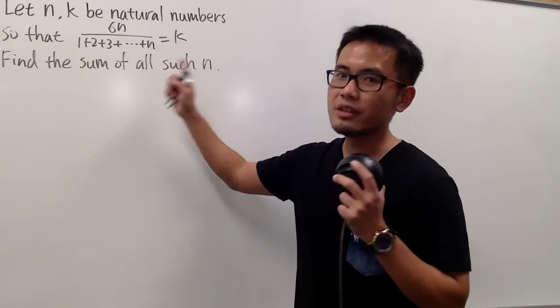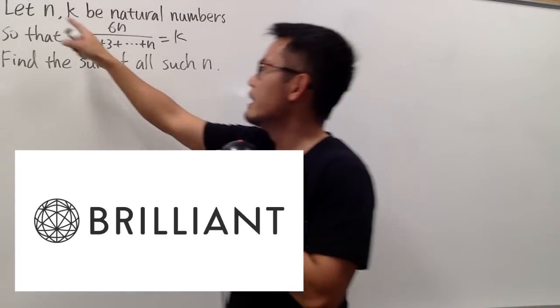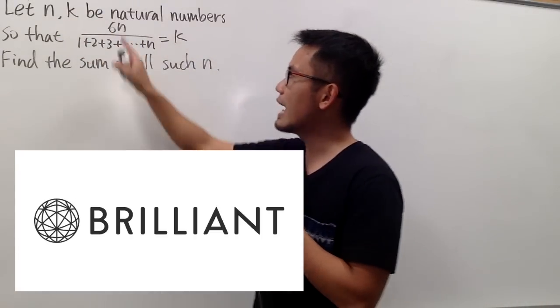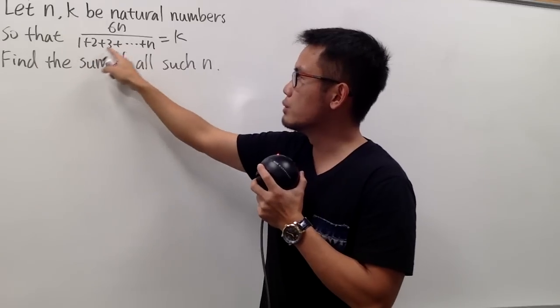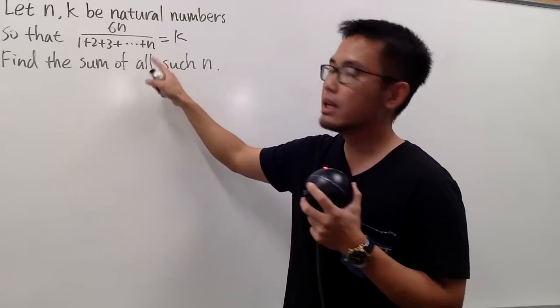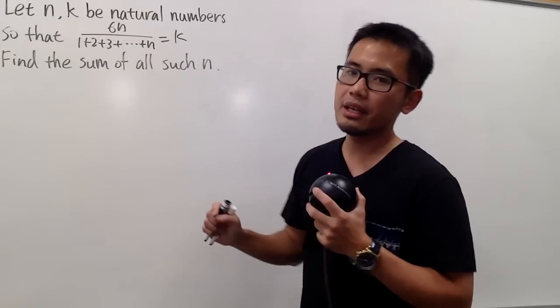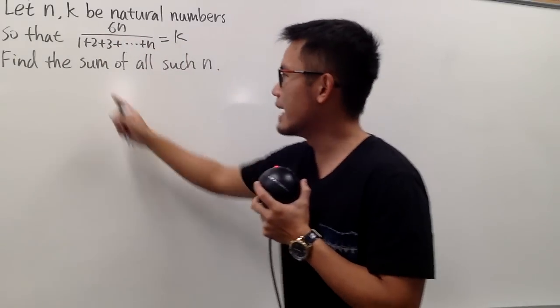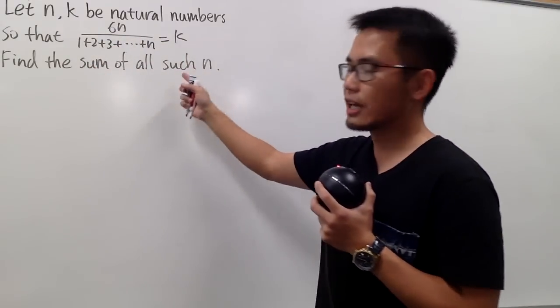Let's do some math for fun. Here we have this question from brilliant.org. We have let n and k be natural numbers so that 6n over 1 plus 2 plus 3 plus dot dot dot plus n. This right here is equal to k, and at the end, we want to find the sum of all such n.